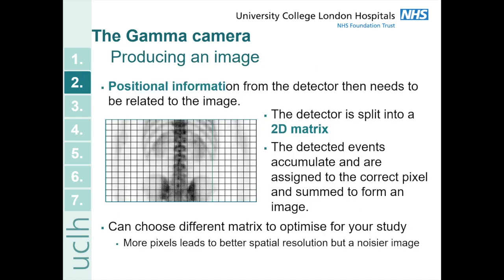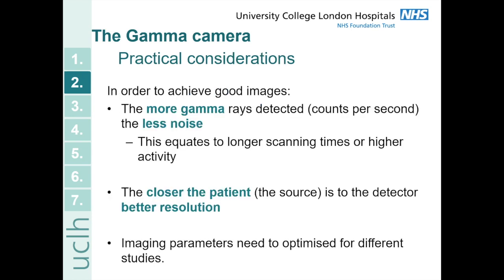Now that we've detected the photons we need to use the positional information from the detector to form the image. The detector is split into a 2D matrix and detected events accumulate and are assigned to the correct pixel within that matrix, then summed to form the image. You can choose the matrix size to optimize for your study — more pixels give better spatial resolution because each pixel will be smaller, but you'll end up with a noisier image because you have fewer counts per pixel. Practical considerations include: more detected gamma rays mean less noise; keeping the detector closer to the patient gives better resolution; and imaging parameters need to be optimized for different types of studies.